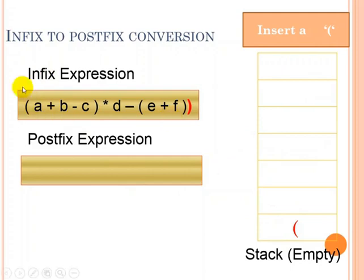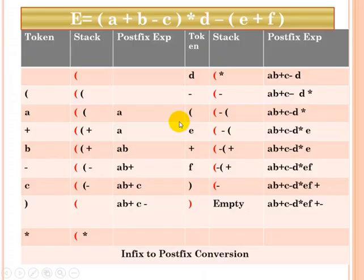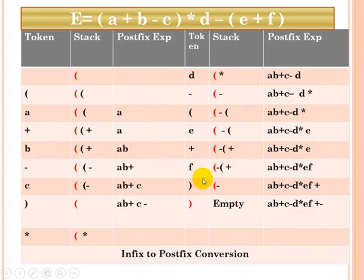We will scan all the tokens one by one and proceed. This is the whole table structure type evaluation, but I will show you one animated example of this process.